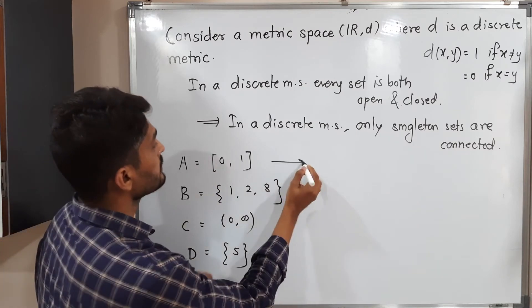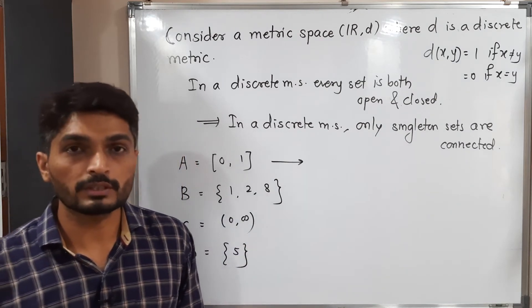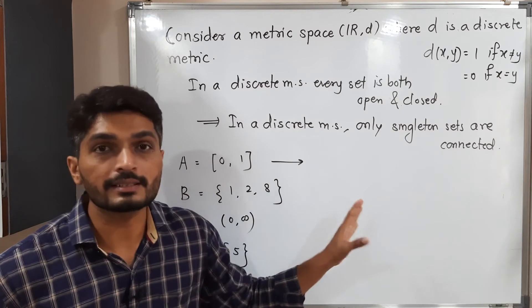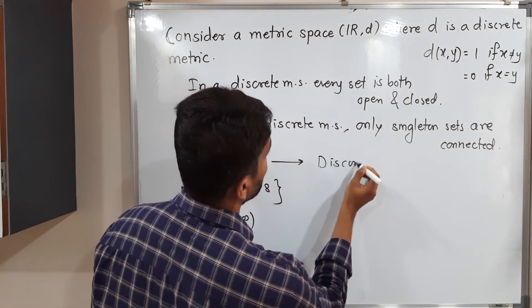See, closed interval [0,1] - infinitely many elements are there. So what is our conclusion? It is not a singleton set. Therefore, it is disconnected.